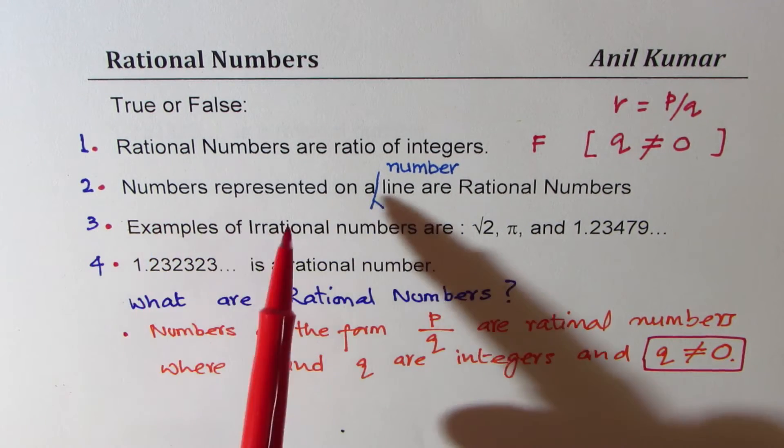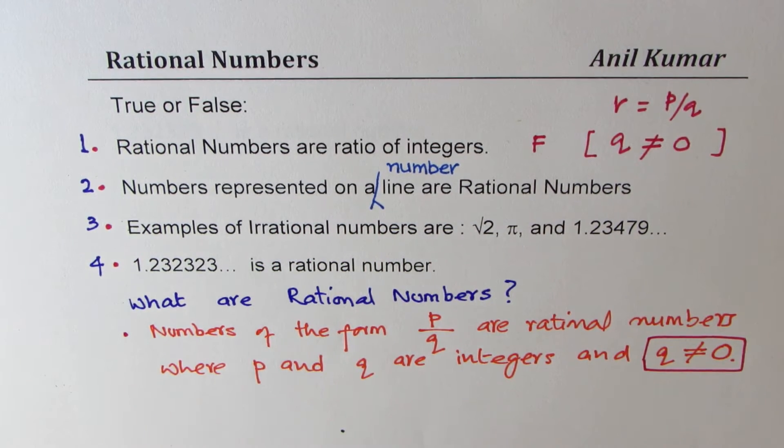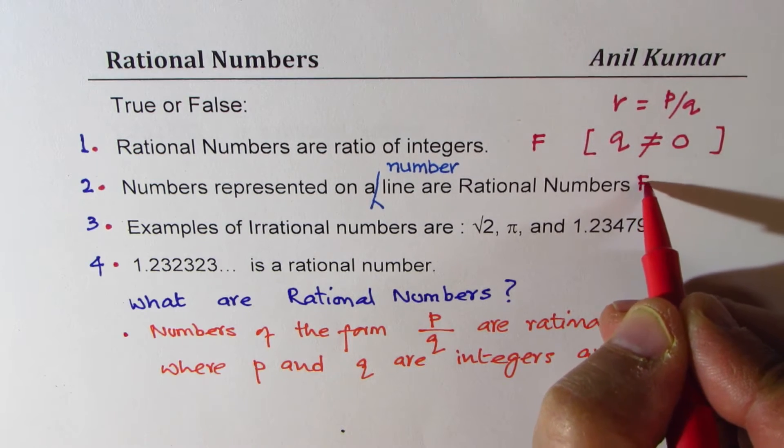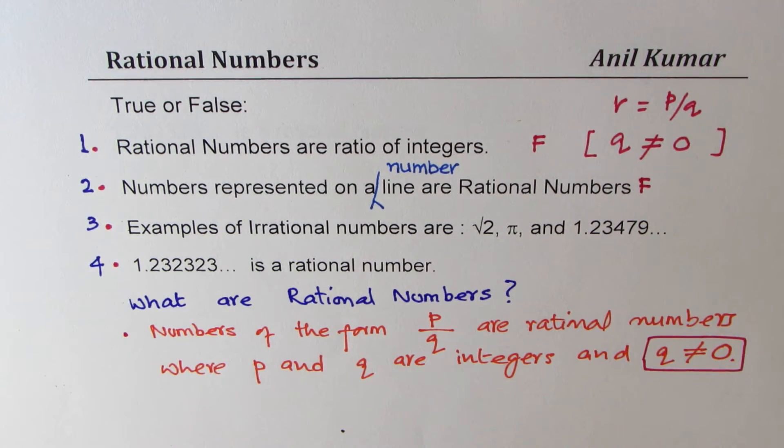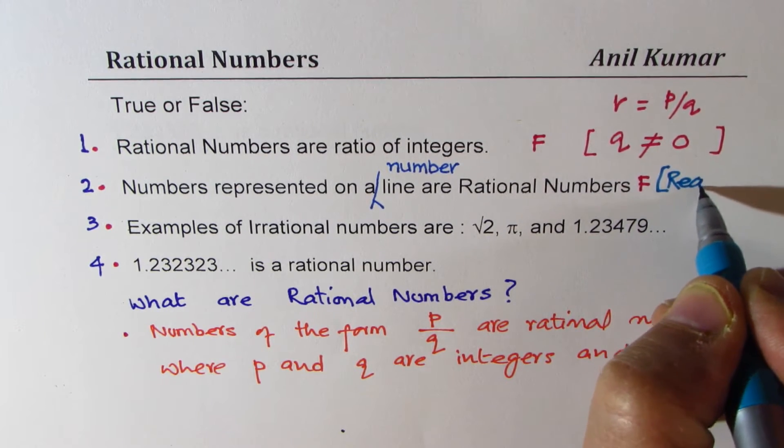Question 2: Numbers represented on a number line are rational numbers. Well, these numbers are real numbers, not rational numbers. So this statement is also false. These numbers are real numbers, not rational.